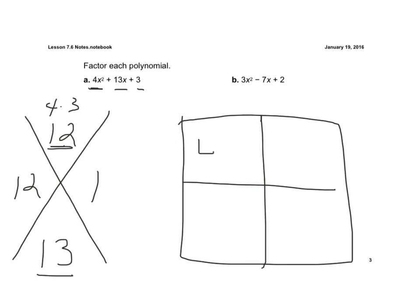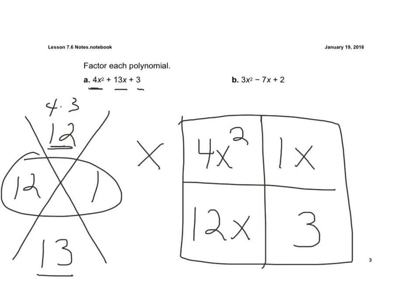So again, the first term of my quadratic polynomial goes there. My last term goes there. And now these two terms with x's go in here. And now if I look at the top, my common factor is x. And if I factor the x out, then I have 4x plus 1 across the top.